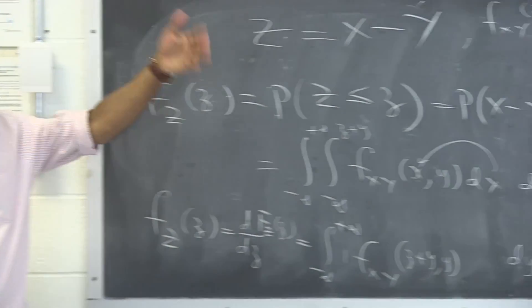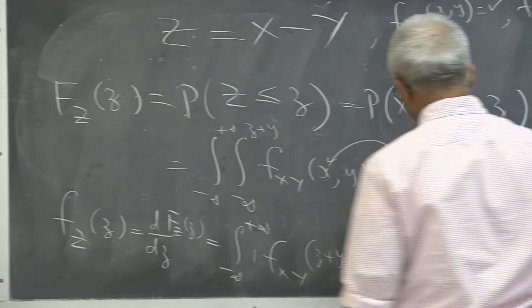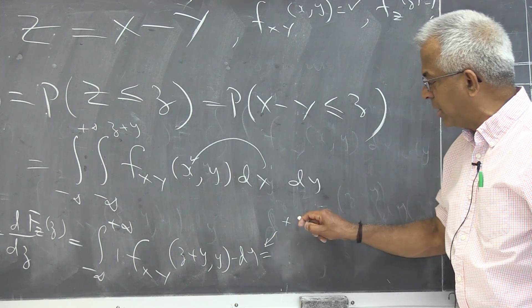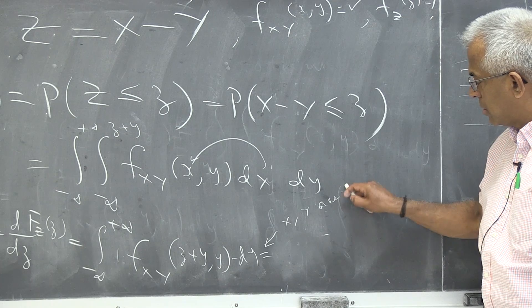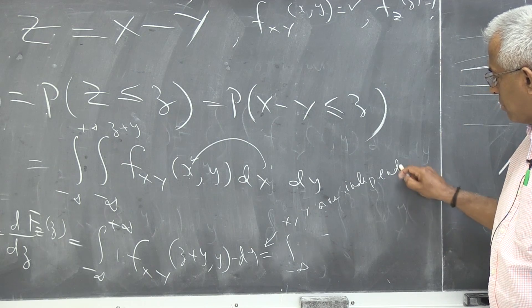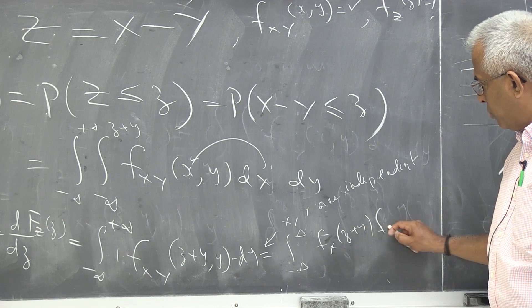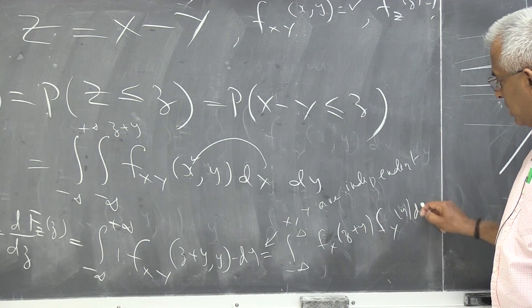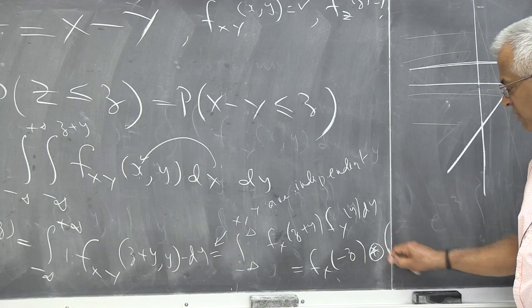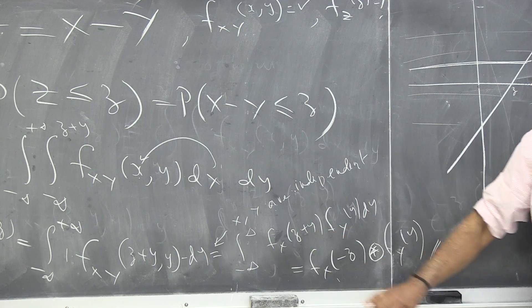That looks very familiar to the previous problem. Previously, remember, we had a minus sign there. Of course, if X and Y are independent, then you could write this as the integral from minus infinity to plus infinity of f_X(z + y) times f_Y(y) dy. This is the convolution of f_X evaluated at minus z and f_Y, because of this plus sign.